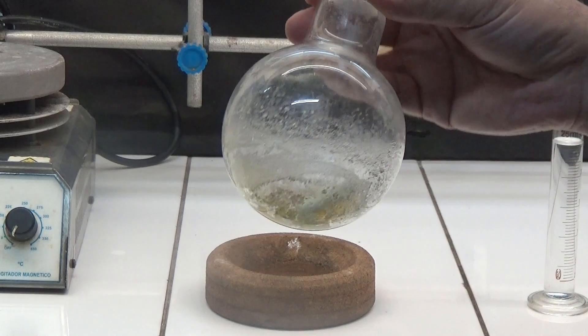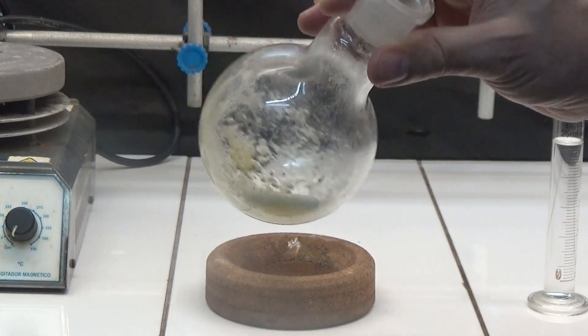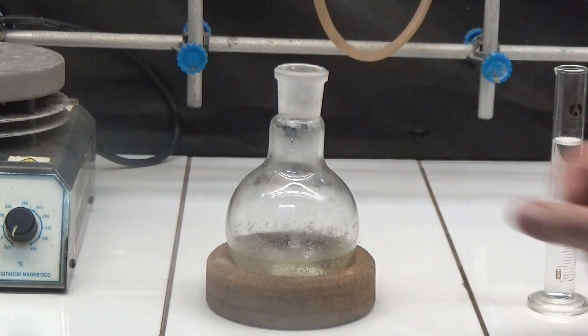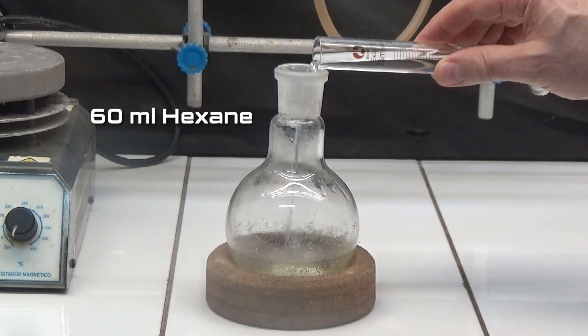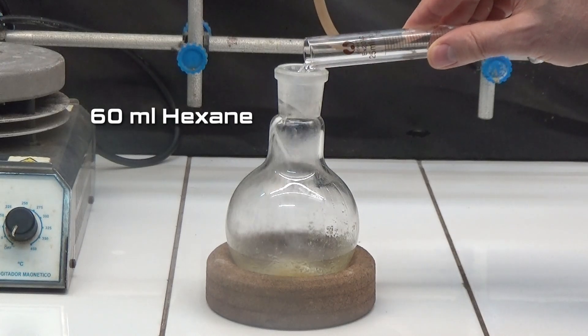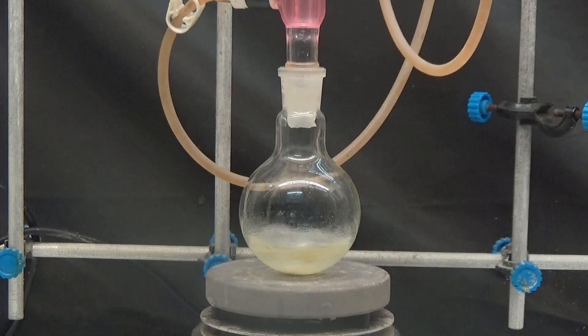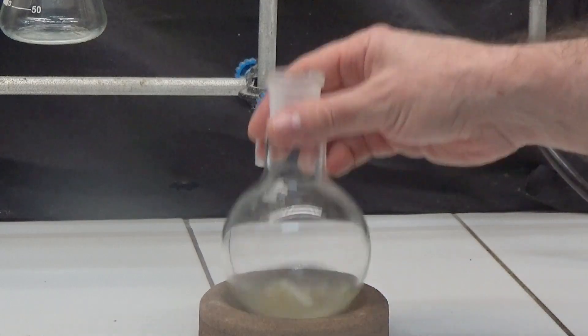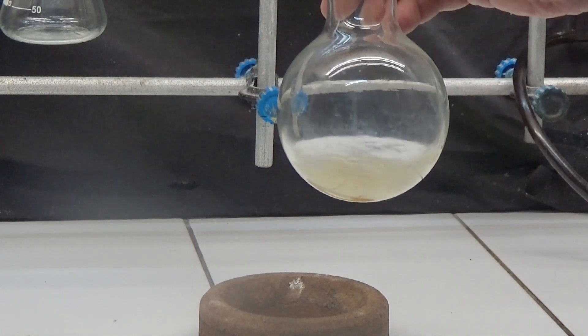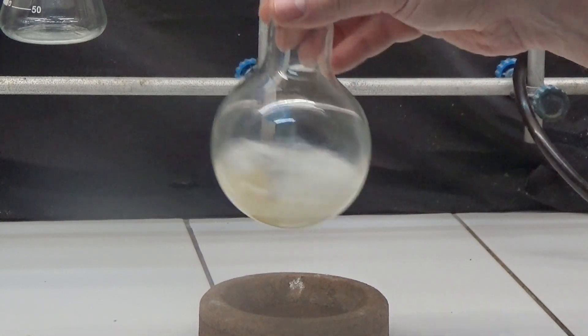The residue remaining in the flask is heated to reflux with 60ml of hexane for 30 minutes. Allow to cool and collect the solid by suction and allow to dry in the funnel with the suction connected.